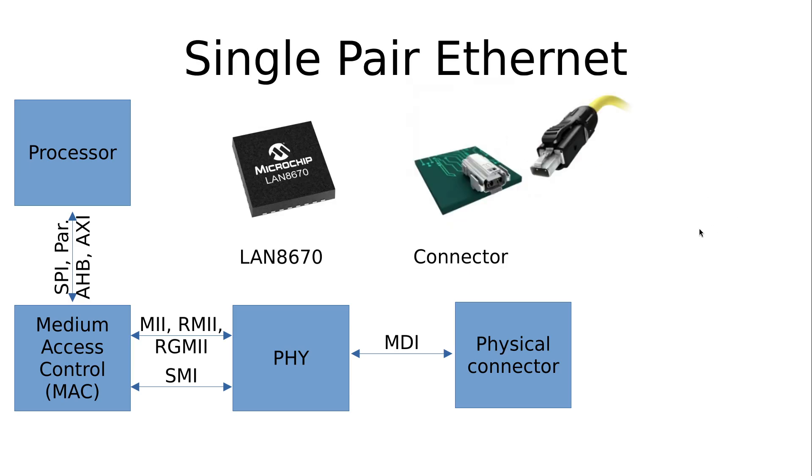And for example in automotive or in industrial there is also something called single pair Ethernet which is just using a single pair of wires to connect to Ethernet. And here once again until the PHY everything stays the same and a PHY here would be the LAN8670 from Microchip and then we have a connector which looks like this here.